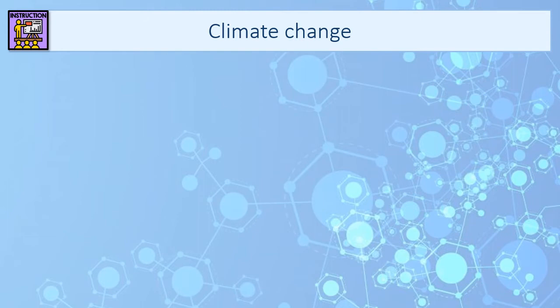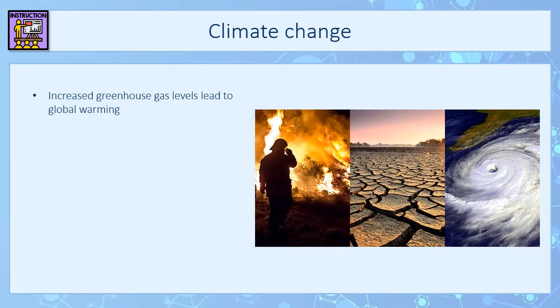The increased greenhouse effect causes global warming — an increase in temperature of the earth — and that global warming leads to climate change. By climate change we mean changes in weather patterns and rainfall. We get increased extreme weather events: you will have seen stories in the news about forest fires, flash floods, and drought — all increased extreme weather events that wouldn't have happened beforehand.